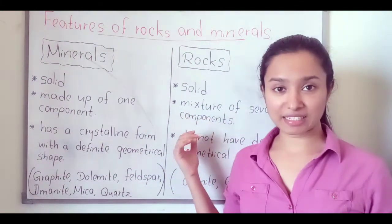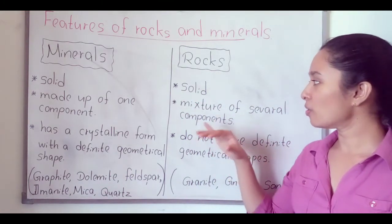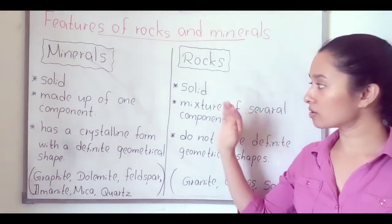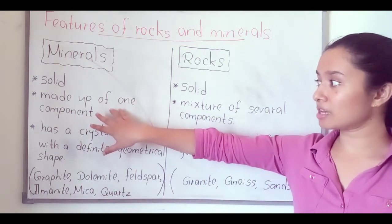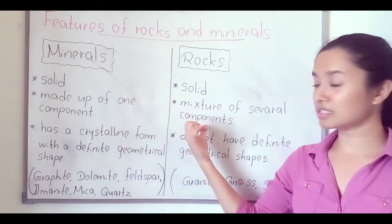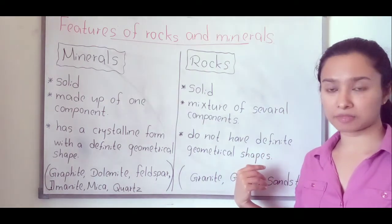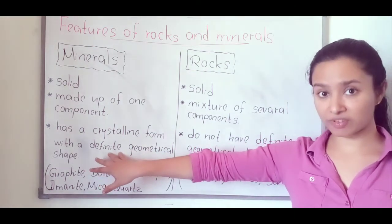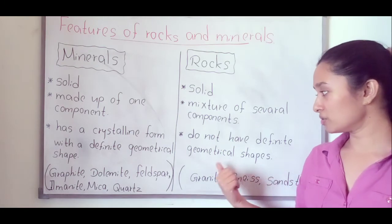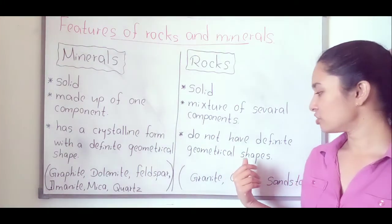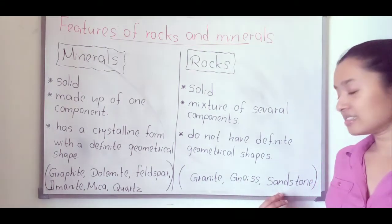Now we can discuss about rocks. Rocks are also solid components, but rocks are a mixture of several components. Rocks do not have definite geometrical shapes, whereas minerals have definite geometrical crystalline forms. Examples for rocks are granite, gneiss, and sandstone.